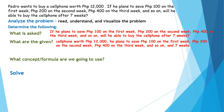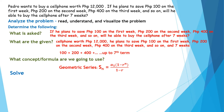The given information: the cell phone is worth 12,000 pesos; Pedro saves 100 pesos the first week, 200 the second week, 400 the third week, and so on; and the time frame is seven weeks. From the given, we can write: 100 + 200 + 400 + … up to the seventh term. We will use the geometric series formula S_n = a_1 × (1 − r^n) / (1 − r), with S_7, a_1 = 100, n = 7.